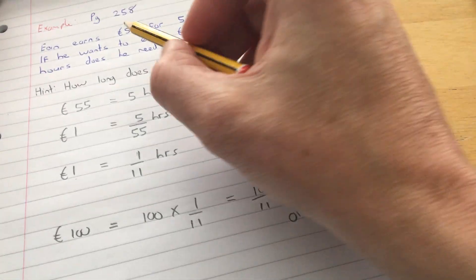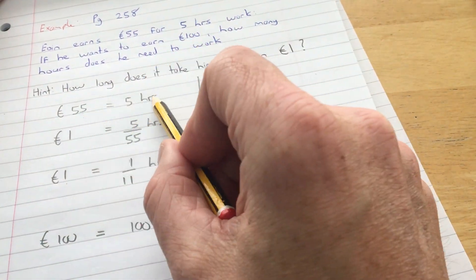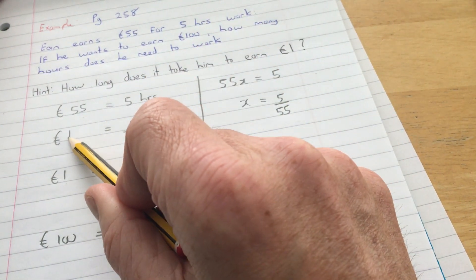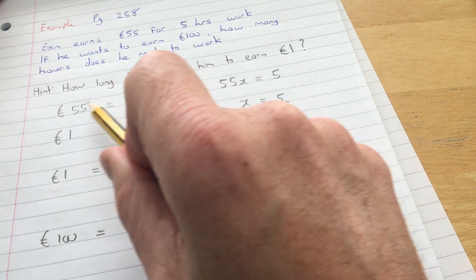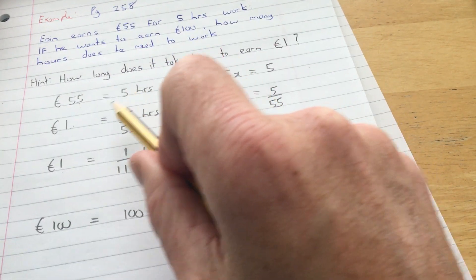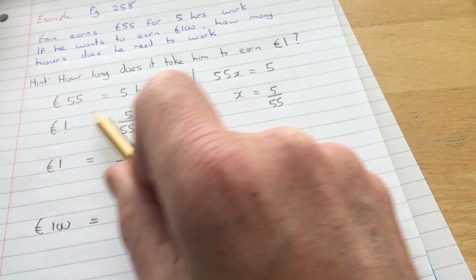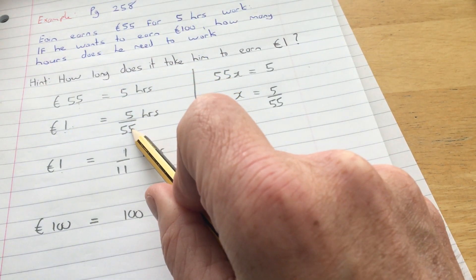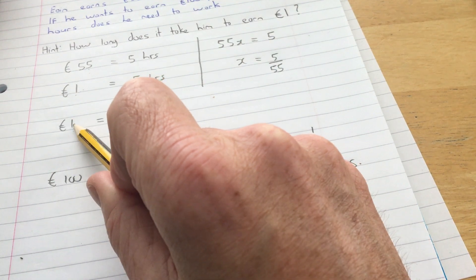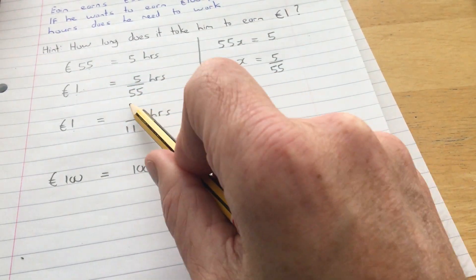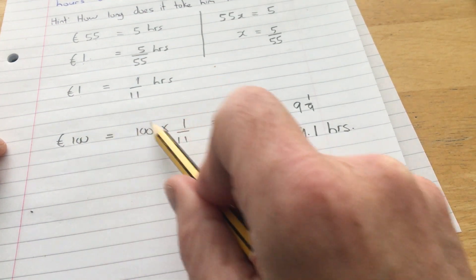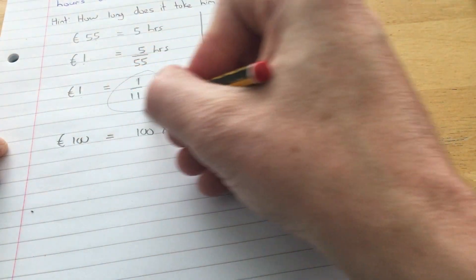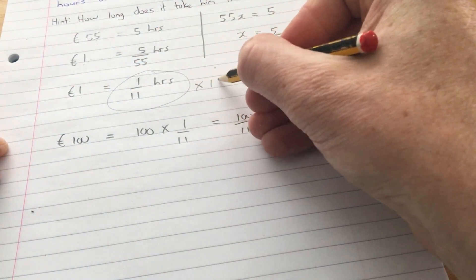If he gets 55 euro for 5 hours, how long would it take him to earn 1 euro? He has to work for 5 hours to get 55 euro. So how long for 1 euro? 5 hours divided by 55. So 1 euro takes him 1 over 11 hours, an eleventh of an hour. Therefore, 100 euro will take him this amount of time multiplied by 100.